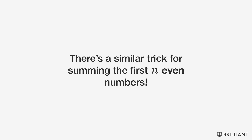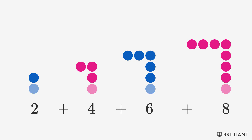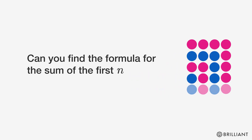There's a similar trick for summing the first n even numbers. Add 1 to all of the odd numbers, and then combine them like you did before. Can you find the formula for the sum of the first n even numbers?